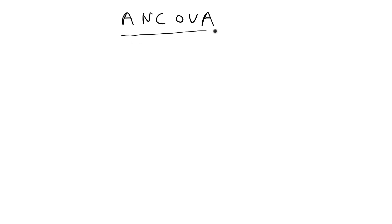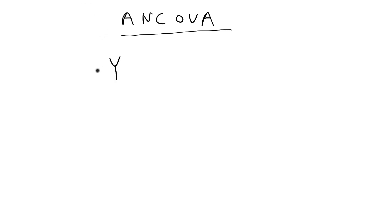Hey everyone! In this video I want to go over how to fit an analysis of covariance model, talk about what that model is in general, and then go over an example in R. An analysis of covariance is a type of model that you fit when you have categorical data, and I'm going to use a simple example of a one-way ANCOVA model.